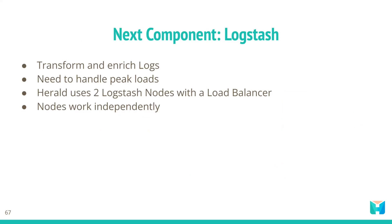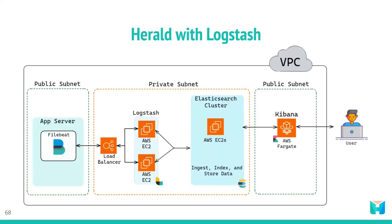The next component we will add is Logstash. Logstash is used to transform and enrich logs, so it also needs to handle peak loads, which implies we need multiple nodes. In Herald we have two Logstash nodes with a load balancer in front of them. One good thing with Logstash is that these nodes work independently, so we don't need to worry about node discovery the way we did with Elasticsearch. In the updated architecture diagram, we still have Kibana to the far right, then the Elasticsearch cluster just to its left, and then the Logstash nodes. Filebeat is installed on the application server, collects the logs, sends them to Logstash, and Logstash enriches the data and sends it to Elasticsearch.